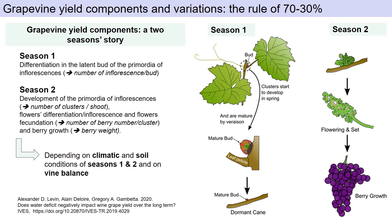The 30% part is linked to the number of berries and their volume. From berry set onwards, the yield will be mainly due to the equation of berry number and berry volume. And this is perhaps the best period to predict the yield.